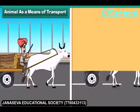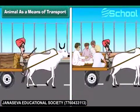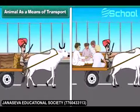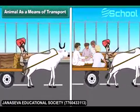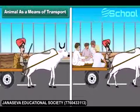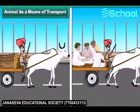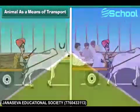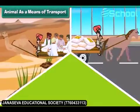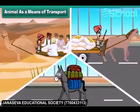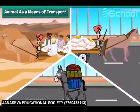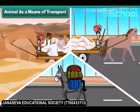Animal-driven vehicles such as Bullock carts are used to carry straw, crops and sometimes even people. Animals like camels, horses and donkeys carry goods and people, so animals play an important role in transport.